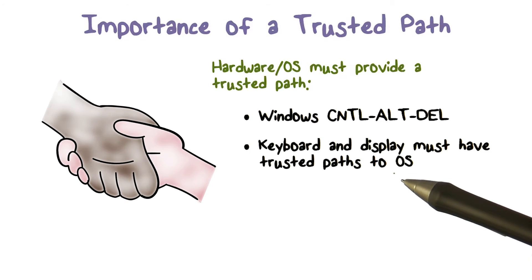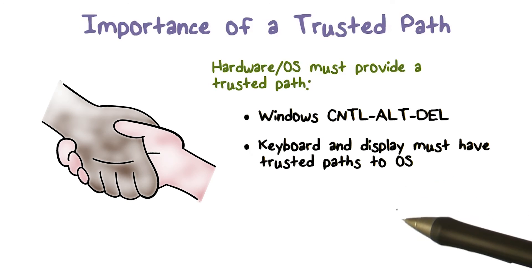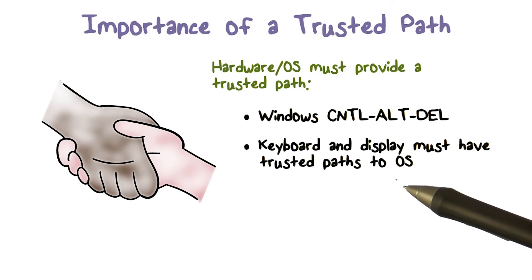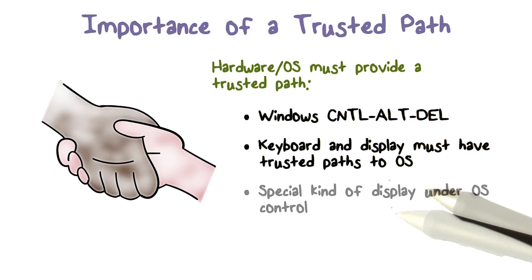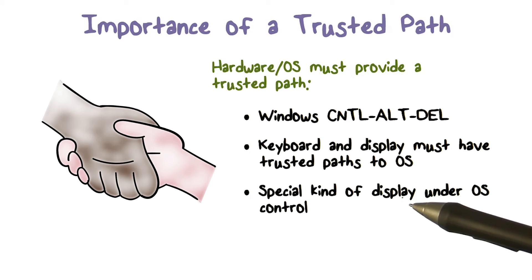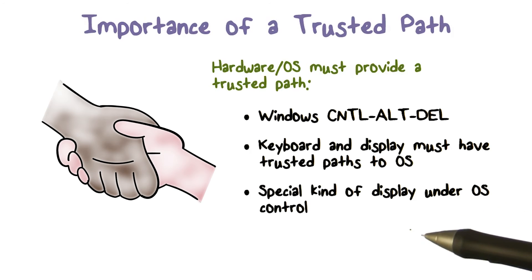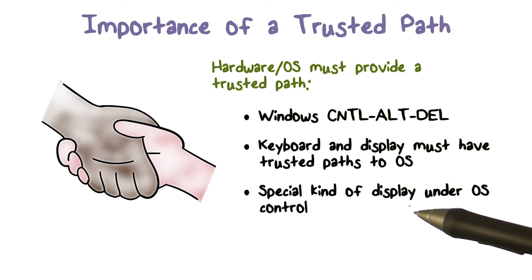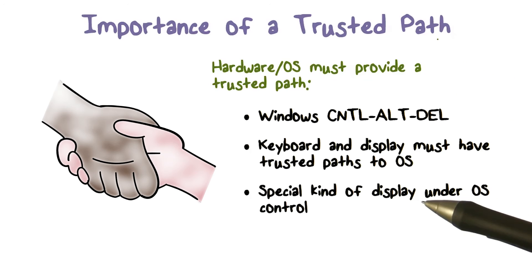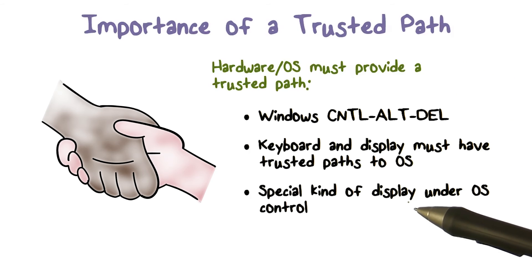But if you're paranoid, we can do a couple of different things to make sure that we're really not talking to somebody else, but to the operating system. People have proposed a bunch of different ideas to make sure that when you're authenticating yourself, you have a trusted path.